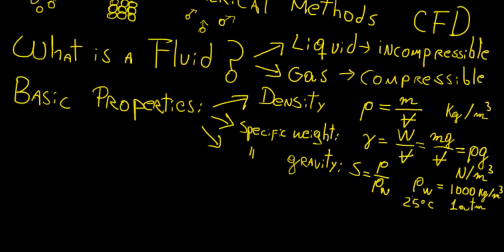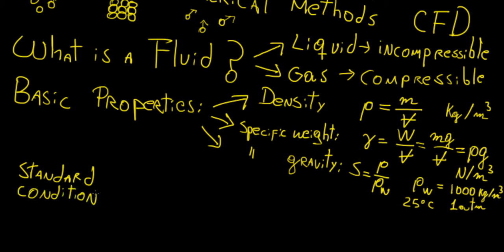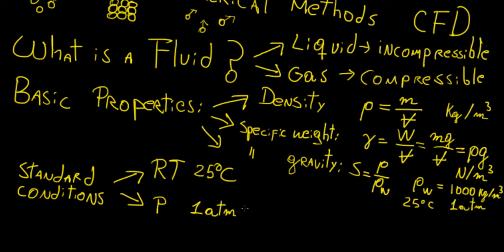A lot of fluid properties actually change when we change temperature and pressure. To deal with that, we use tables of standard values that tell us the properties of a particular fluid, like density, at standard conditions. Standard conditions usually refer to two things: room temperature, which is 25 degrees Celsius, and a pressure of one atmosphere, which is atmospheric pressure — equivalent to 101 kilopascals. So if you look up a table of values, it will usually give you fluid properties at those standard conditions.